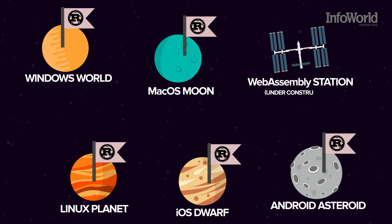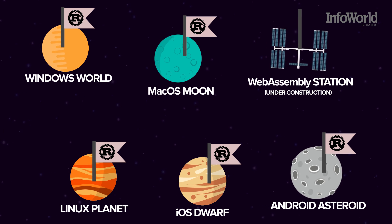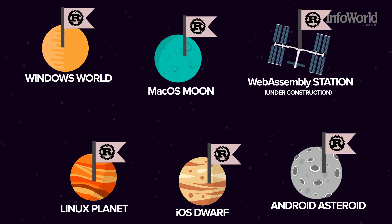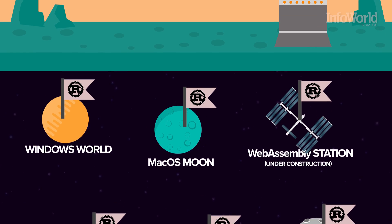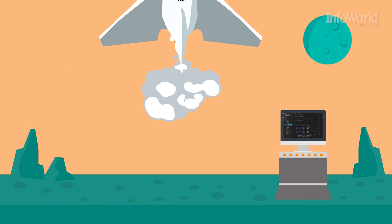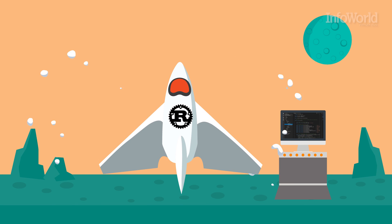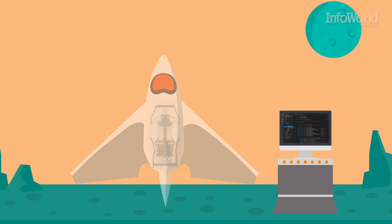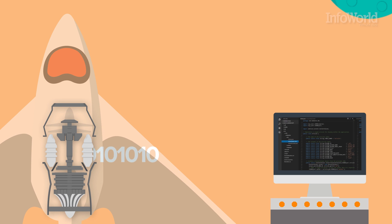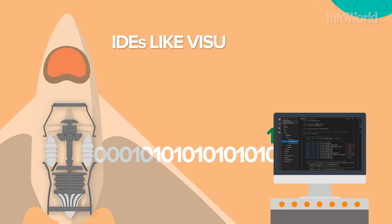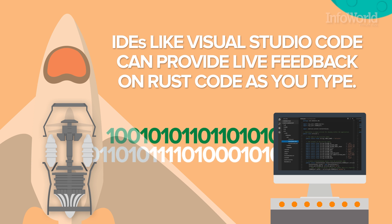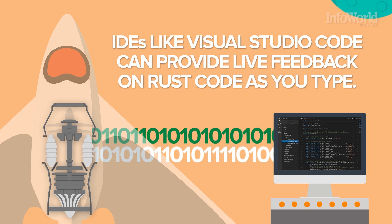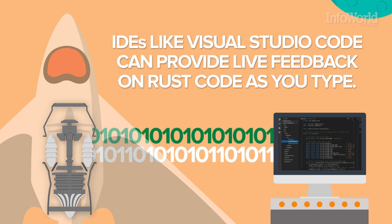You can even compile to WebAssembly, the next-generation binary format for browser-based apps. Rust's toolchain works hand-in-hand with the modern tools developers expect to use today. In fact, popular IDEs like Visual Studio Code can provide live feedback on Rust code as you type.